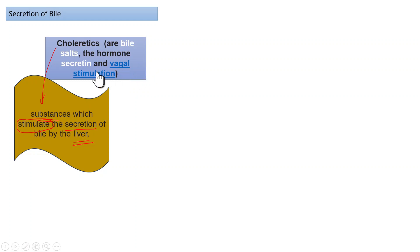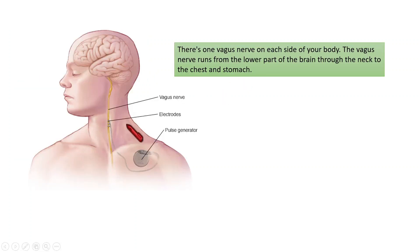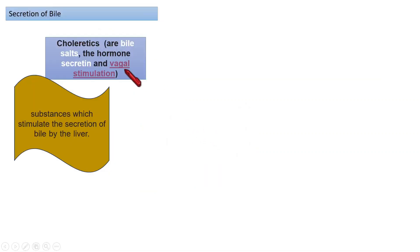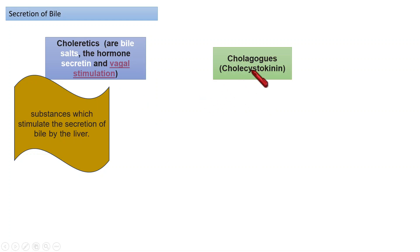Vagal stimulation refers to stimulation of the vagus nerve — a nerve that runs on each side of the body from the lower part of the brain through the neck and chest down to the stomach. Stimulation of this nerve also causes the liver to secrete bile.